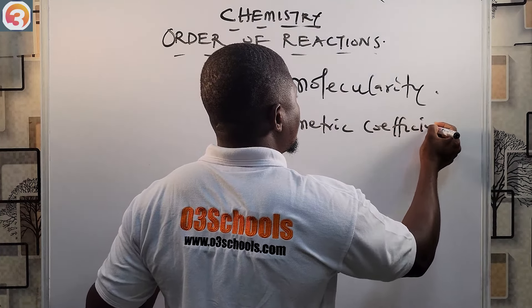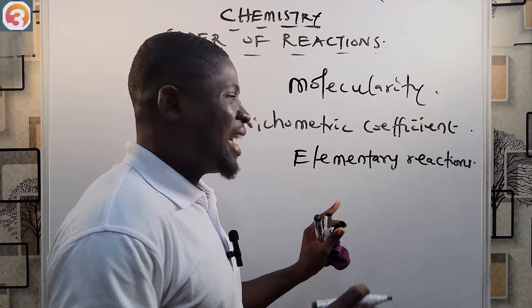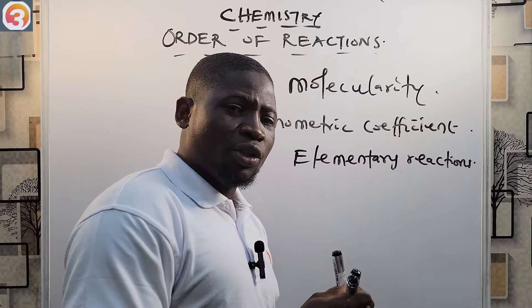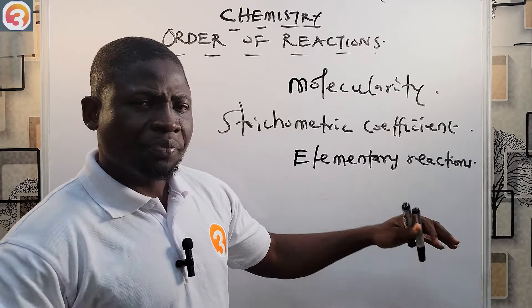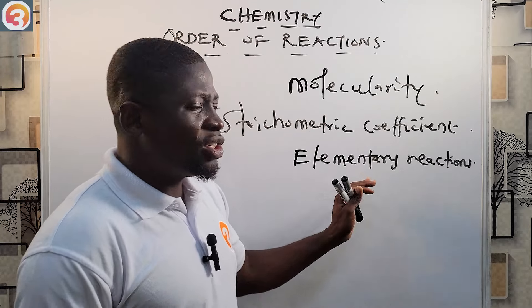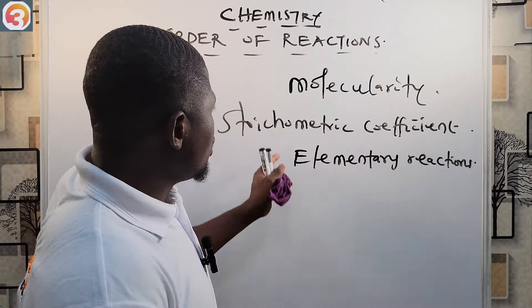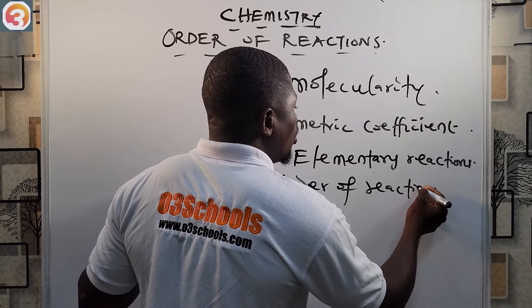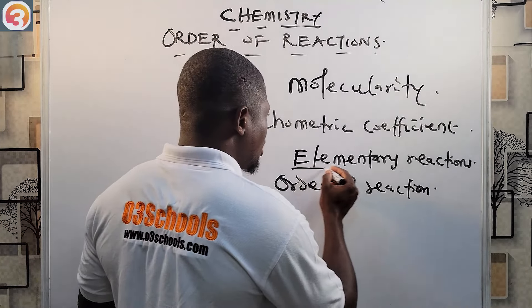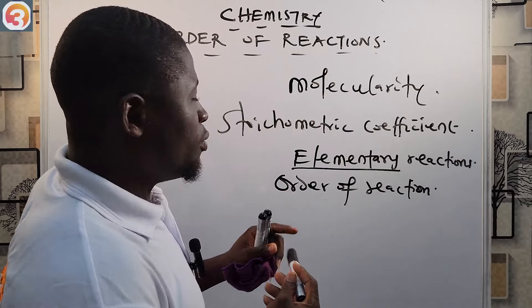The order of a reaction can be found by experiments — we use experiments to find the order of reactions. Some people have erroneously referred to the molecularity or the stoichiometric coefficient as the order of reaction.